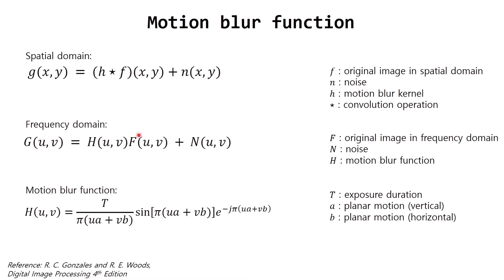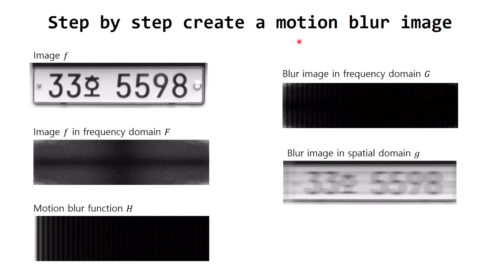In this video we will use these two equations to artificially create a motion blur image. The steps are: first, open or import our image f as a grayscale image; next, apply a Fast Fourier Transform to create image F in the frequency domain; then create the motion blur function H; multiply F with H to get the blur image in the frequency domain; and finally apply an inverse Fourier transform to get our blur image g.